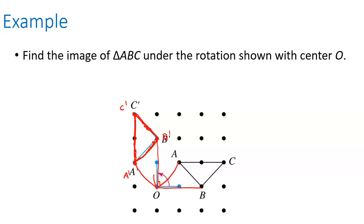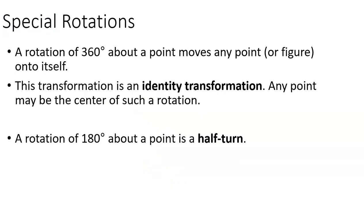Special rotations: if you rotate something 360 degrees, you get right back where you started — it's called an identity transformation because it doesn't matter what the center of rotation is, you end up with exactly the same figure. Rotating 180 degrees gives what we call a half turn, which makes sense: if a full turn is 360 degrees, a half turn is 180 degrees.